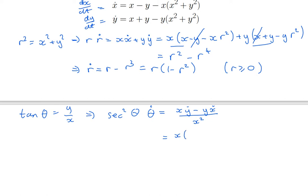x y dot is x plus y minus y r squared. Minus y times x dot, which is x minus y minus x r squared. All divided by x squared.